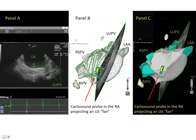The middle panel shows a number of contours traced on gated images displayed in three-dimensional space. One can also see the CartoSound probe projected in the right atrium. Panel C then shows a filled 3D reconstruction showing the body of the left atrium, pulmonary veins, and the left atrial appendage.